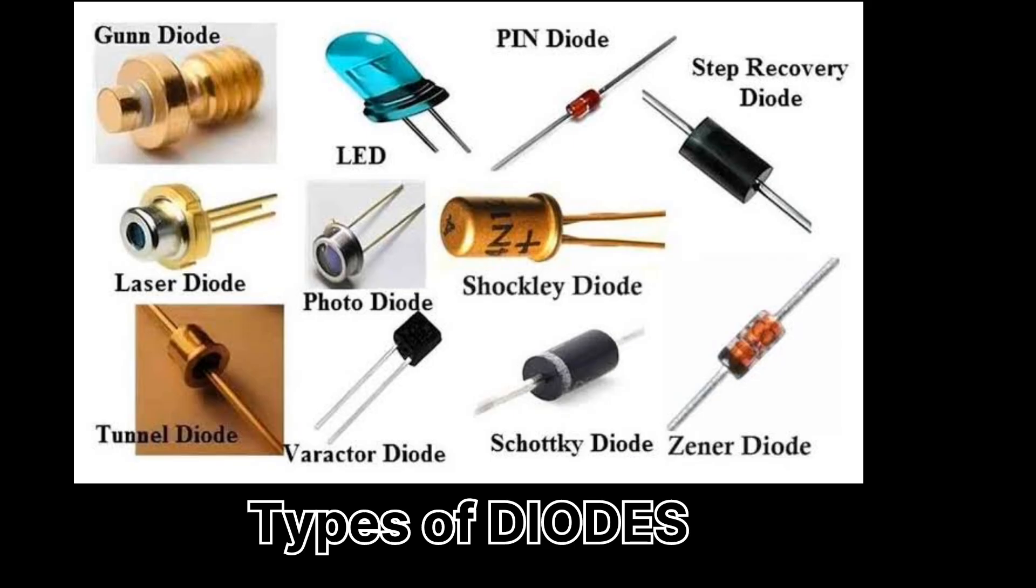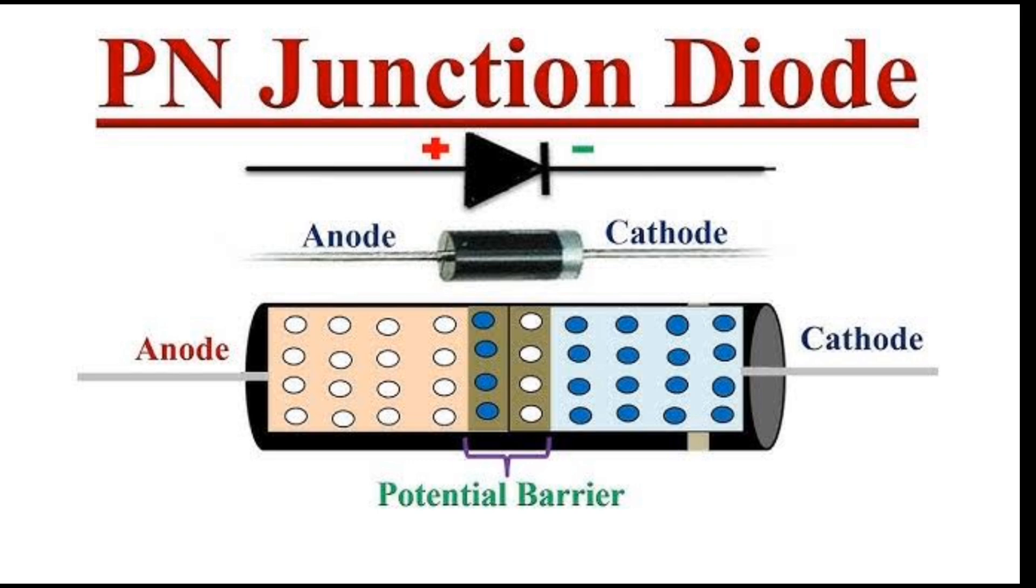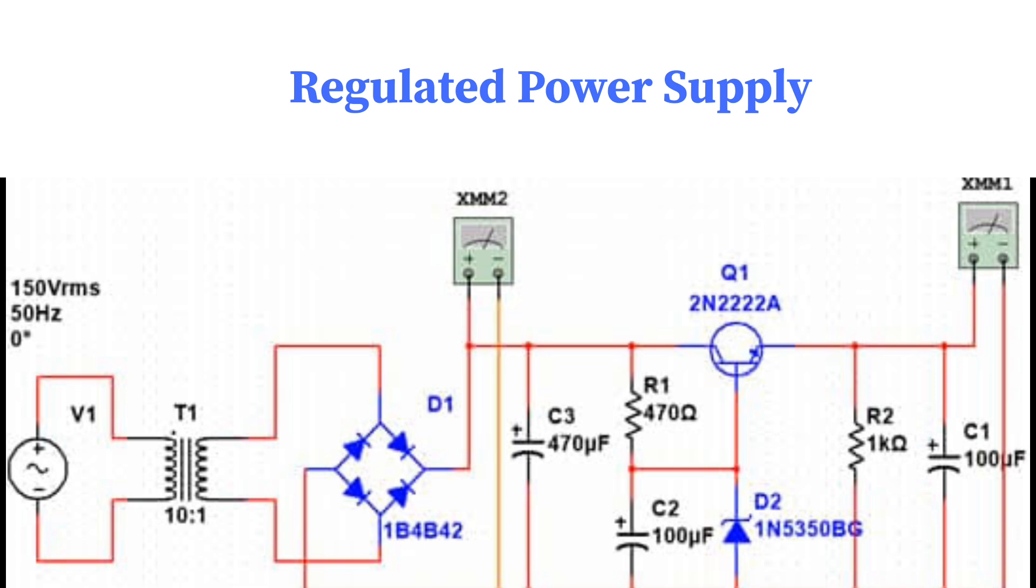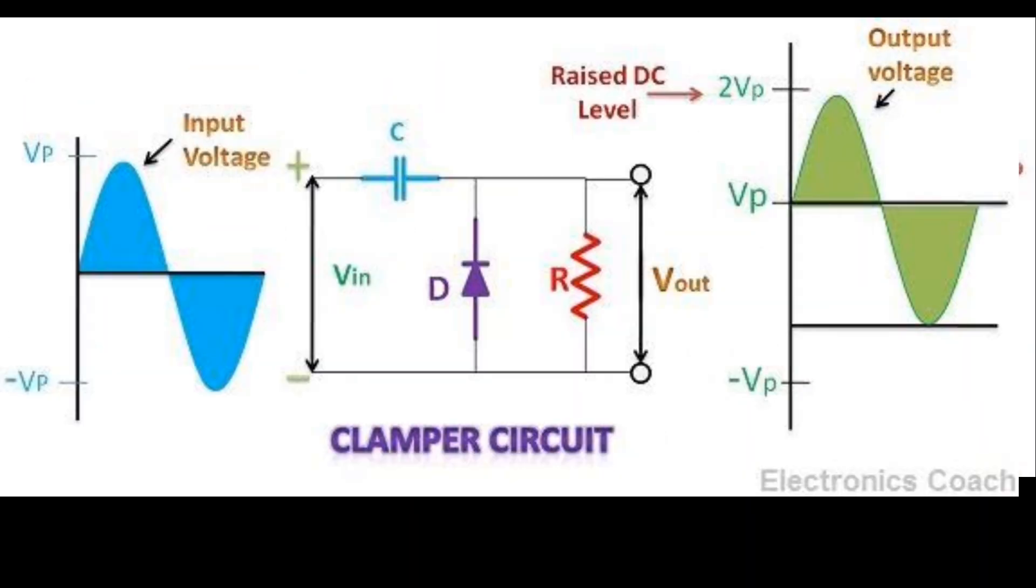We have different types of diodes. First is a simple PN junction diode. It is mostly used as a rectifier for converting AC into DC. It is also used in many other applications like in clipper and clamper circuits.